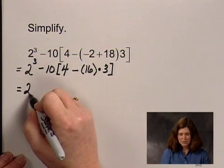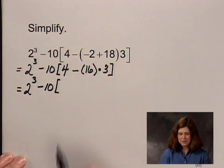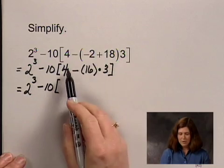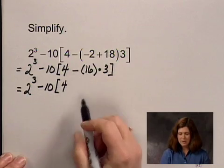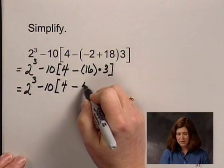So I have 2 to the third power minus 10 times the quantity, and I'm going to write 4 minus, and I'm going to perform this multiplication, 16 times 3, which is 48.